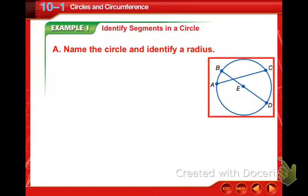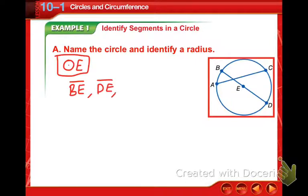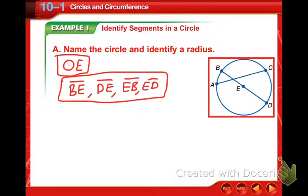So here we have a circle. We need to identify a radius and name the circle. So naming a circle, what you use is the center point. And here the center point is E. So we draw a circle, put a little dot in the middle, and our circle name is E. The second answer is to identify radius. We have a couple options here. We can do BE, we can do DE, or we can switch those around and do EB and ED. All four of those are naming two different radii that are listed here.